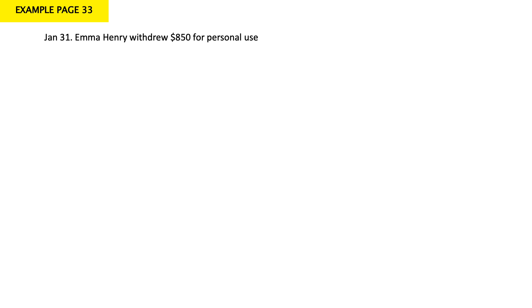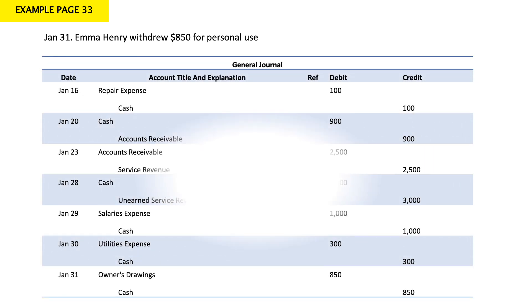January 31: Emma Henry withdrew $850 for personal use. When the owner withdraws money for personal use, this is called drawings. My cash decreased by $850, so I credit my cash. Drawings are debit accounts — they increase in debit. My entry: debit owner's drawings, credit cash for $850.